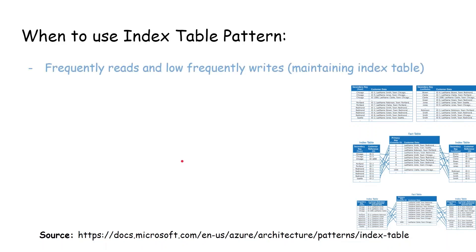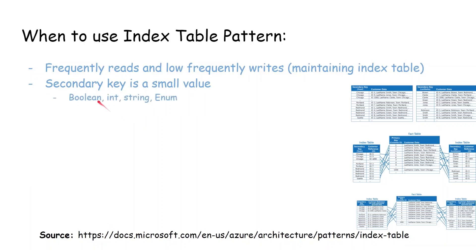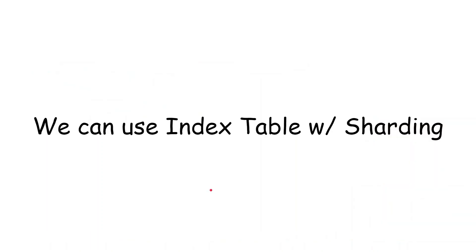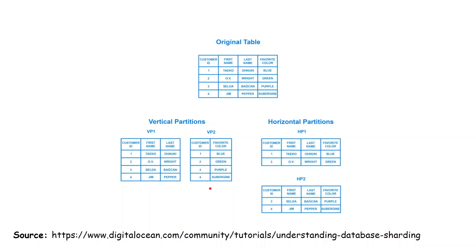When should we use the index table pattern? One situation is when we have frequent read operations. If we have a lot of reads, we should consider this pattern — but we should also ensure we have low-frequency write operations, since high write frequency means we have to maintain and sync the index tables with the fact table. Another situation is when the secondary key is a small scalar value such as a boolean, integer, string, or enum. If the key is a list — like a list of strings or integers — it cannot be used as a secondary key.